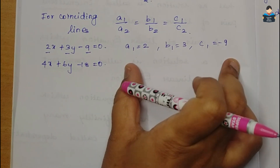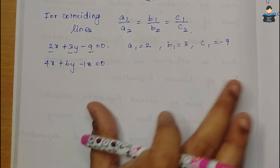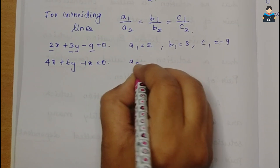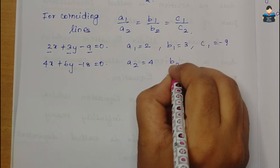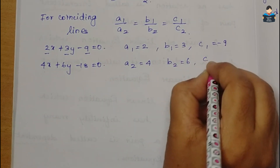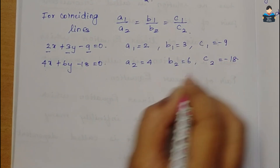Working through the example: a1 = 2, a2 = 4, b2 = 6, and c2 = minus 18. Now we compute: a1 by a2 is 2 by 4.